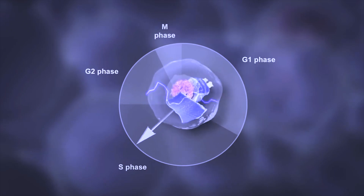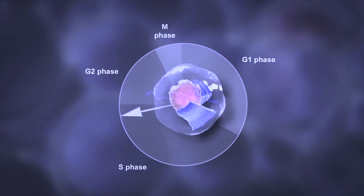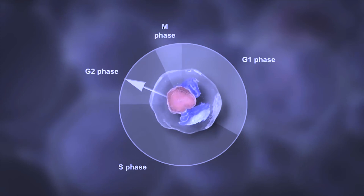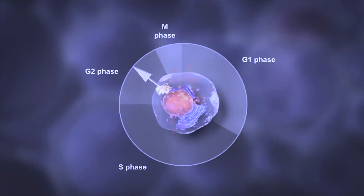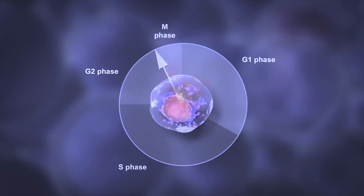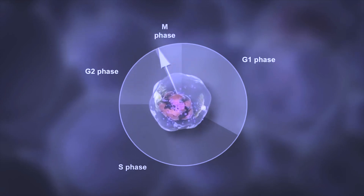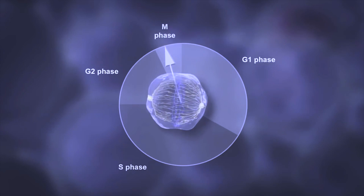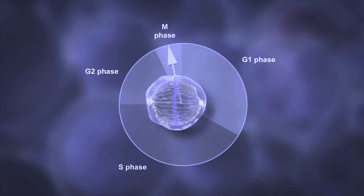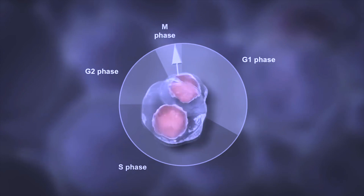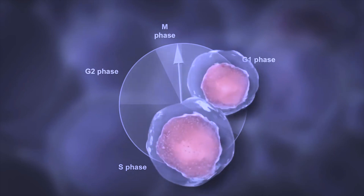During G1, the cell prepares for the S phase. During the S phase, replication of DNA happens, and during the G2 phase the cell grows in size, adding more cytoplasm and organelles. After the G2 phase, the cell re-enters prophase.